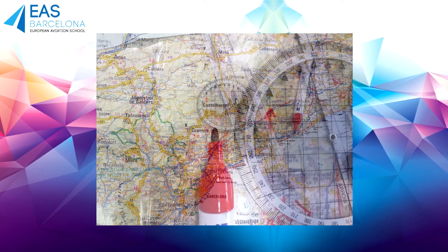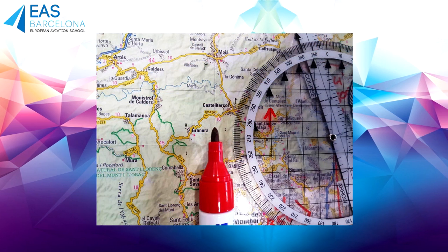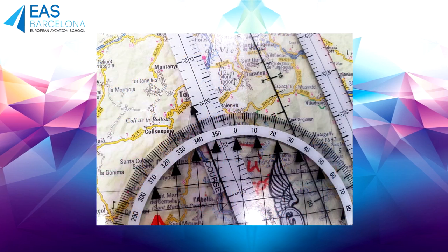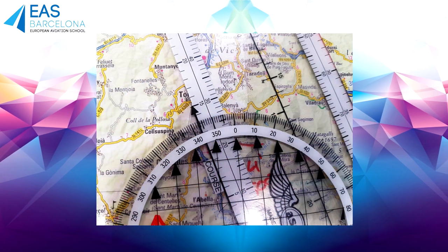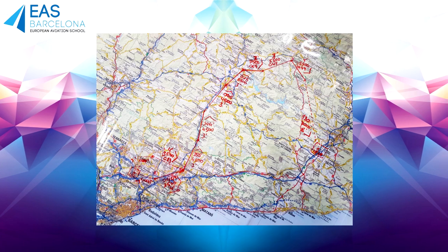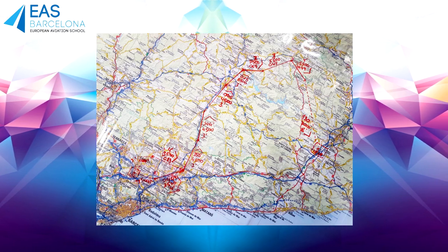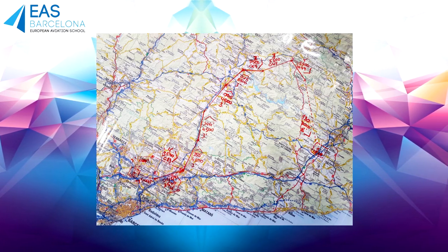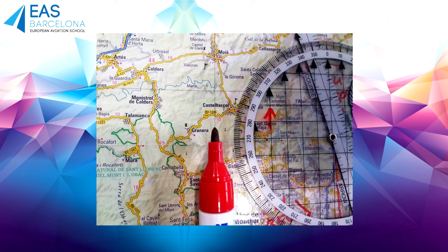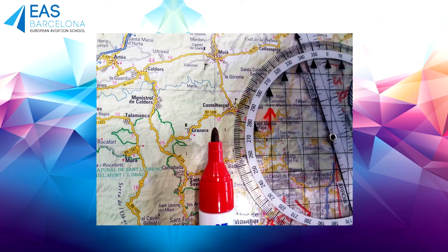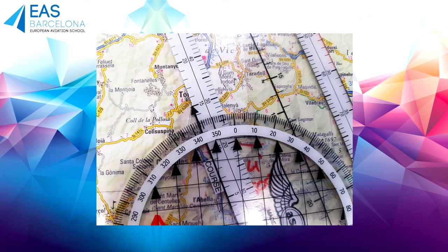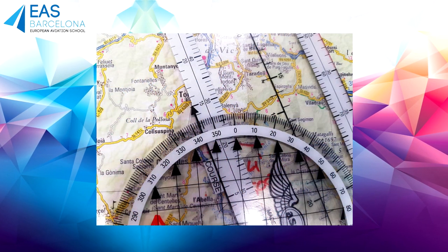Now we're going to mark our points on the map and draw straight lines between them using the plotter and the marker. As you can see, it is an identification route that doesn't follow a straight line to Girona. With the route drawn, we will proceed to calculate the distances and the true tracks using the plotter, as we're going to see in the following videos.